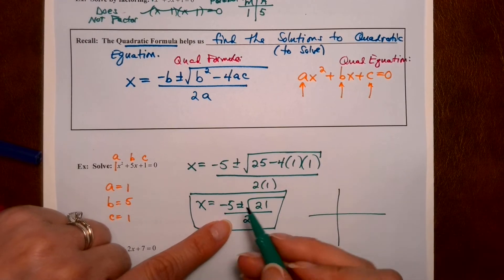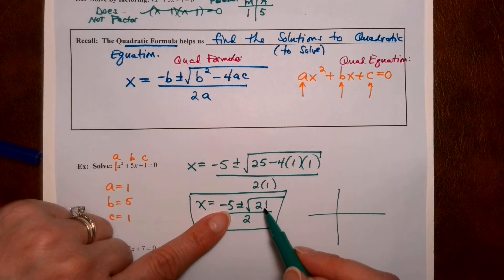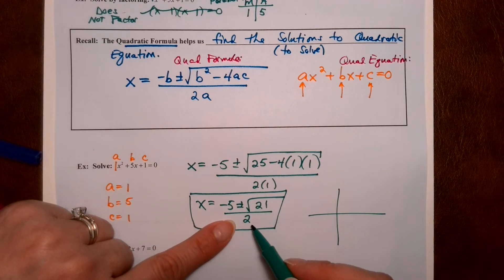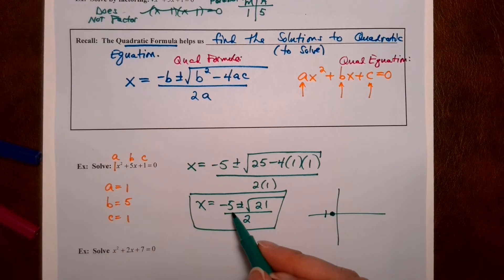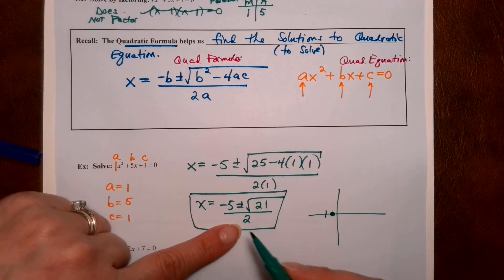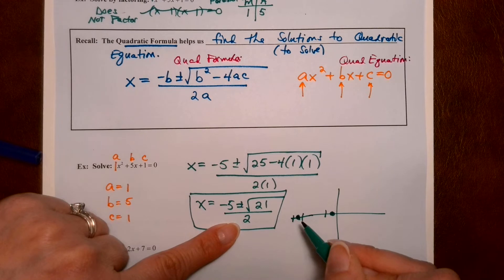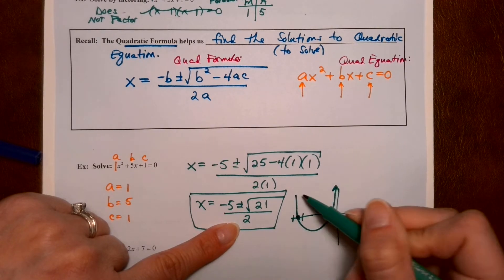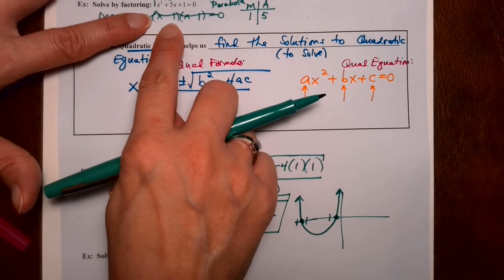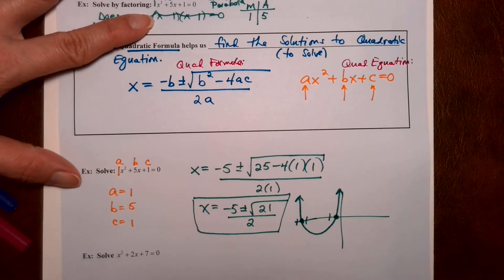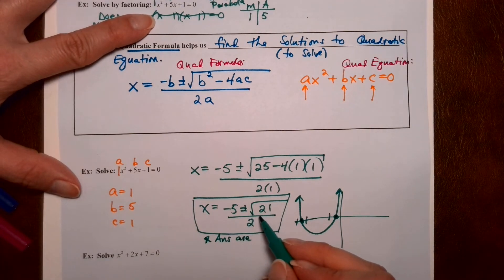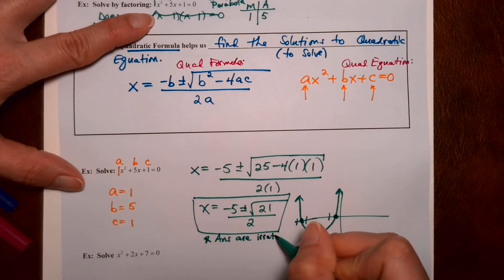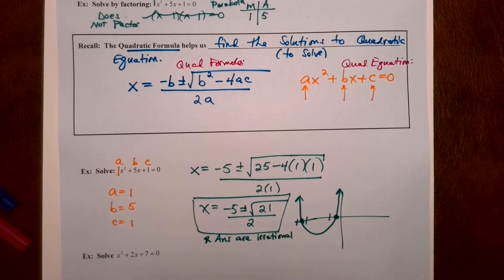Looking at the graph: negative 5 plus radical 21 — that's about 4 point something — all over 2 gives us something between 0 and negative 1, so it's right there. Negative 5 minus 4 point something gives about negative 9 point something over 2, so that's between negative 4 and negative 5 — there's the other x-intercept, and then we have a parabola opening up. The reason I couldn't figure them out by factoring is because the answers are irrational radicals. This exact form is the answer — we keep it just like that.